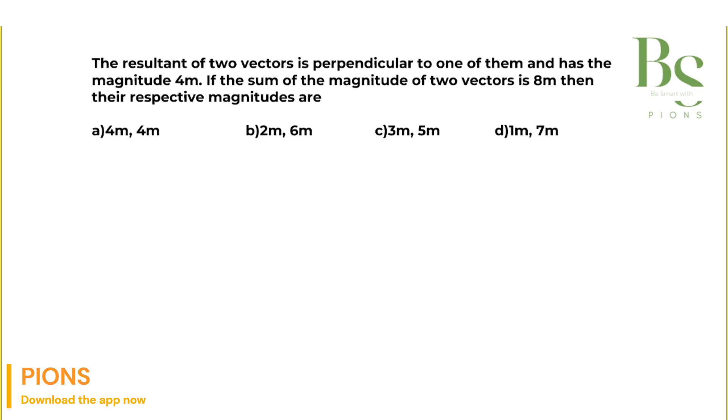First of all, let's draw here. If you assume that this is our vector, any vector A, and the head of the first vector is connected to the tail of the second vector, this is our any vector B.